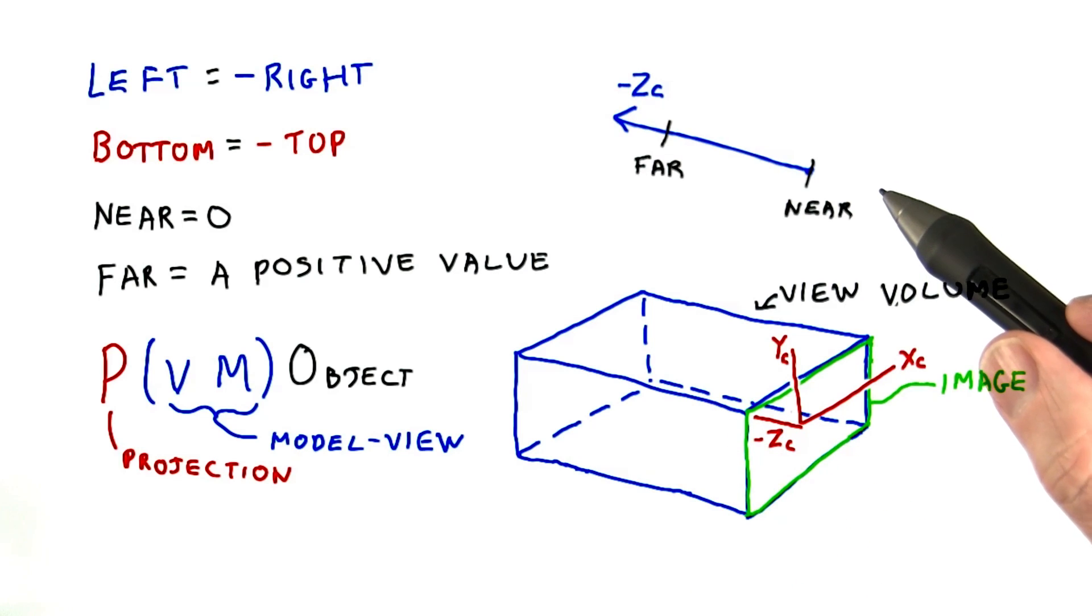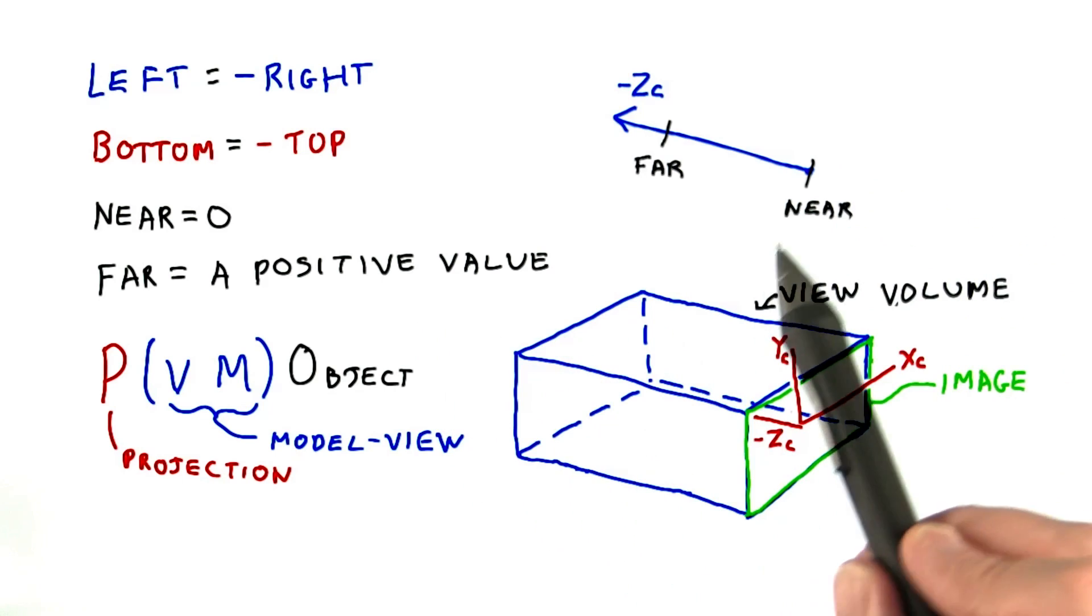That said, 3JS thinks about the orthographic camera as going in a positive direction. So the far value is specified as a distance along the negative Z axis.